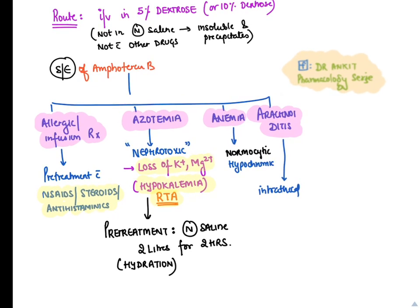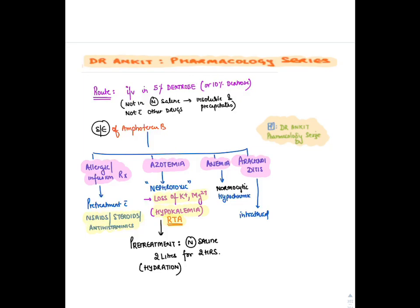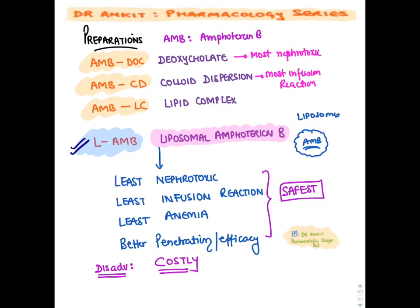Side effects of amphotericin B — the '4As': allergic reaction (prevent with NSAID, steroids, or antihistamines), nephrotoxicity/azotemia with loss of all ions (prevent with 2L saline pre-treatment for 2 hours), anemia (normocytic, hypochromic due to bone marrow suppression), and arachnoiditis (meningeal inflammation from intraventricular injection). The best preparation is liposomal amphotericin B (L-AmB) — least toxic but very costly.